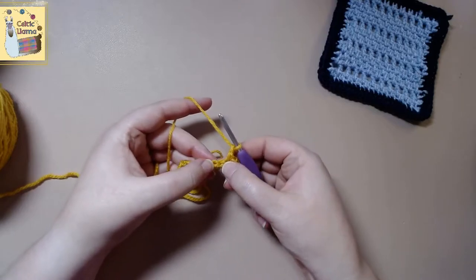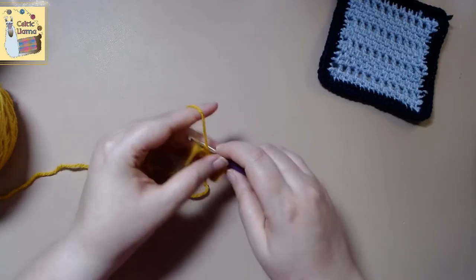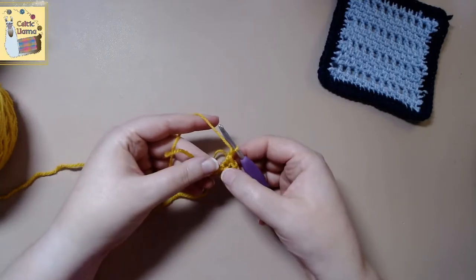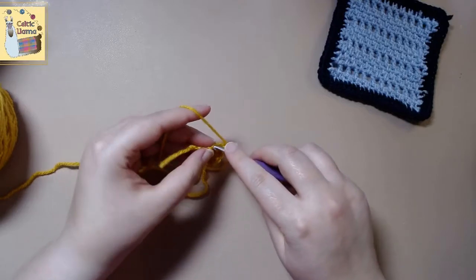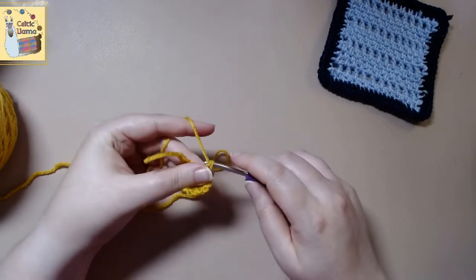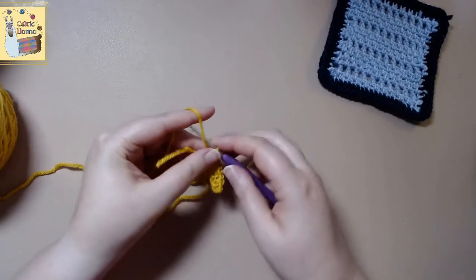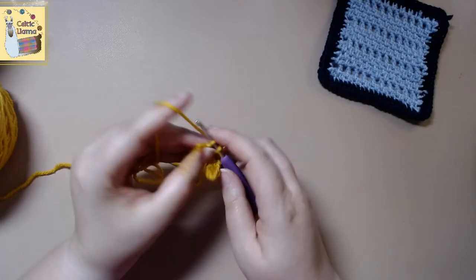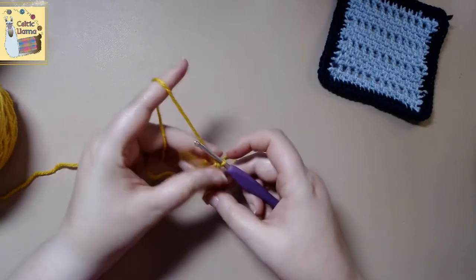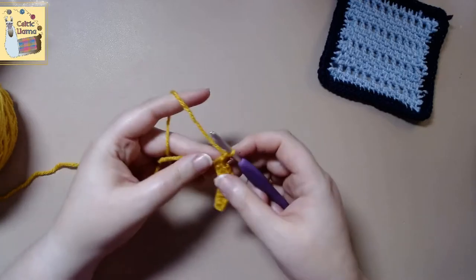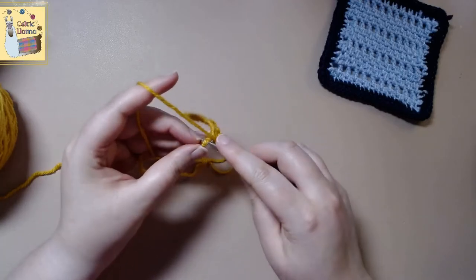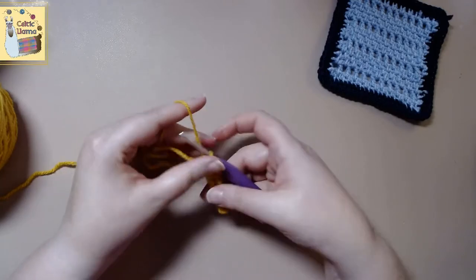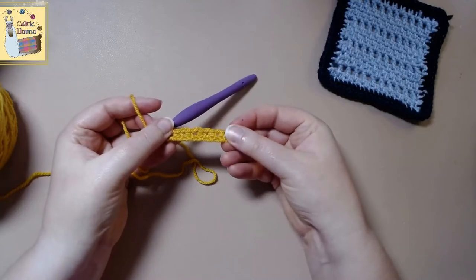So skip a stitch. Go into the next one. And chain one. So skip. Single crochet. Chain one. Alright. And here we are at the end of the row. You can kind of see how that's turning out.